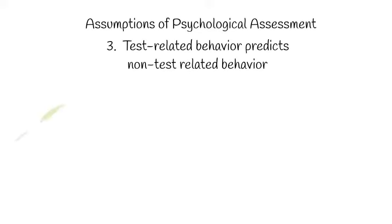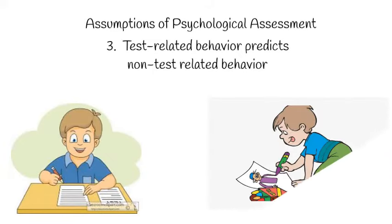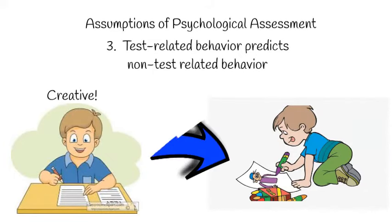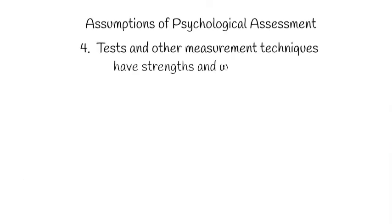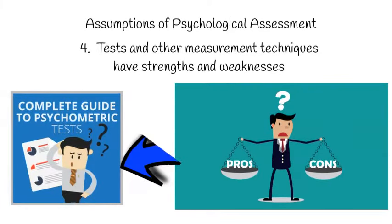The third major assumption is that test-related behavior predicts non-test-related behavior. In other words, we expect that a person's scores on different psychological states and traits will predict whether a person will manifest these states or traits in his or her life. The fourth major assumption is that psychological tests and other measurement techniques have strengths and weaknesses — they are fallible instruments, so it is crucial to know their limitations and to know when to use them.